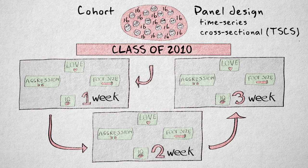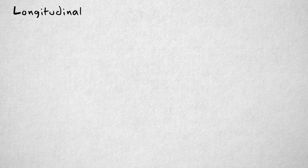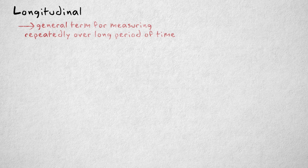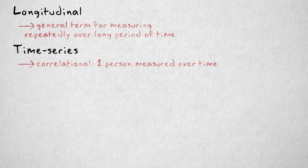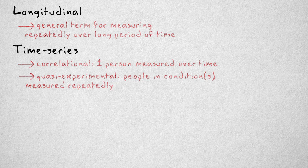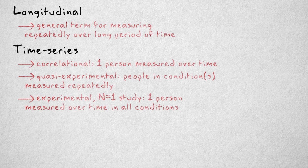It's easy to get these terms mixed up with the terms longitudinal and repeated measures designs. Generally speaking, longitudinal refers to any study that follows one or more participants over a long period of time, whether it's experimental, quasi-experimental, or correlational. Time series design usually refers to correlational studies of just one person measured at fixed intervals, but can also refer to groups being measured repeatedly in quasi-experimental designs. The term time series design is sometimes also used for experimental studies, although the term N=1 study is more popular in this context.